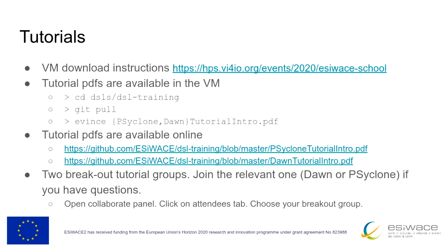To get the instructions, there are different ways. We put them on the VM so you can simply do a git pull on this directory, then open the PDF with instructions. Or you can get them online with your browser by going to either of these two links according to the session you chose.